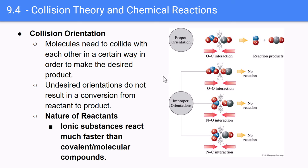Undesired orientations do not result in a conversion between reactant and product. We cannot control exactly how molecules will collide — we can only change factors like the amount of energy present and the number of effective collisions. Additionally, ionic substances react much faster than covalent and molecular compounds because when ionic substances are dissolved in water or dissociated into aqueous ions, they're free-moving. Free-moving ions require significantly less energy to convert between reactant and product, resulting in a collision more likely to convert reactant to product.